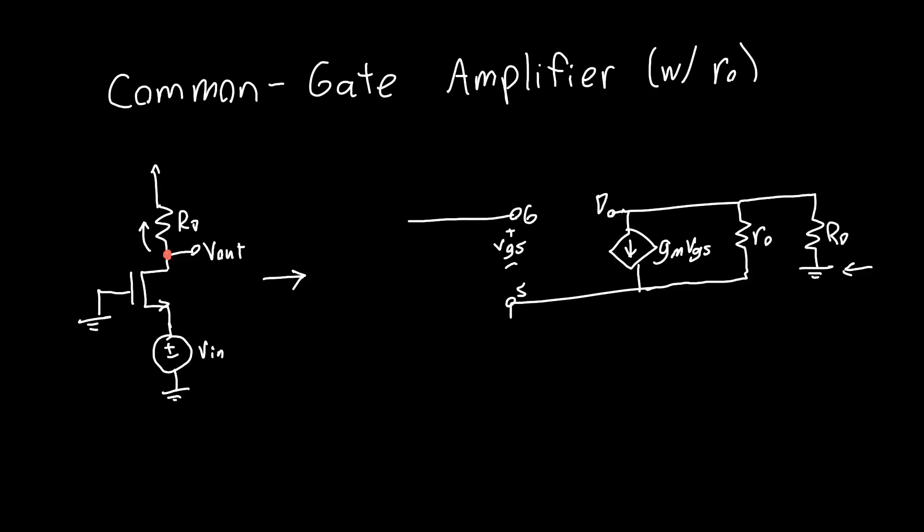At the source, we're applying this input voltage VIN, and the gate is grounded. We want to find the three central quantities of interest: the voltage gain, the input resistance, and the output resistance.